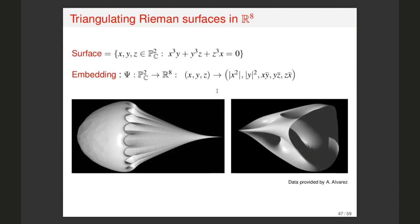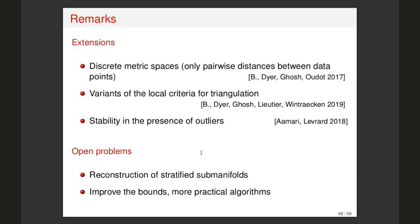Here is an example implementation. This is a Riemann surface defined as the set of complex points in the projective plane satisfying a polynomial equation. The data were provided by Aurélien Alvarez, who was interested in computing the Euler characteristic of this surface. Using an embedding into R^8, we can sample the manifold, reconstruct it, and compute the Euler characteristic. That is the end of the second part.